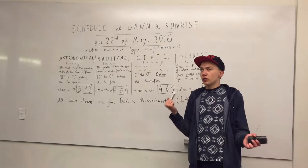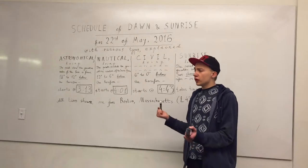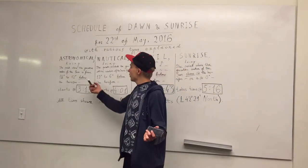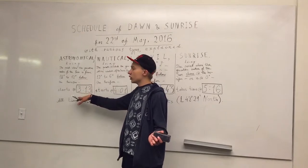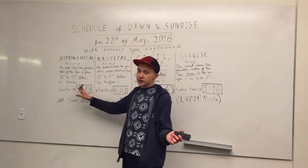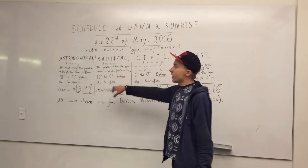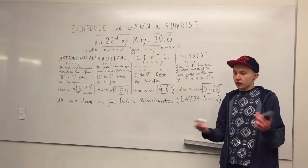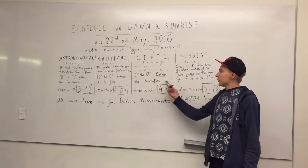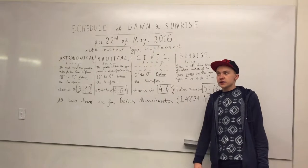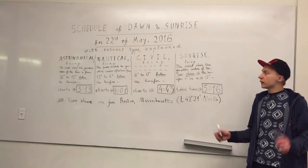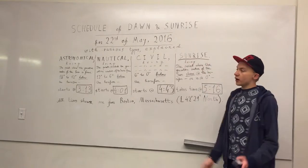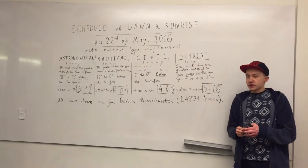Just for us — maybe urban or metropolitan inhabitants — astronomical twilight is just night; we don't feel it at all. Nautical twilight, we can see that the sky became a little brighter, but here on Earth it's still night. Civil twilight is somewhat the start of the morning.